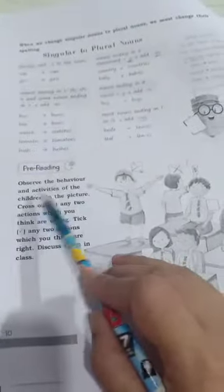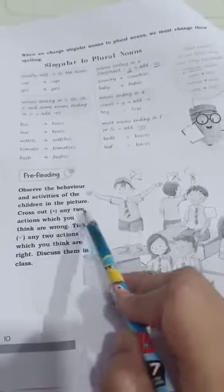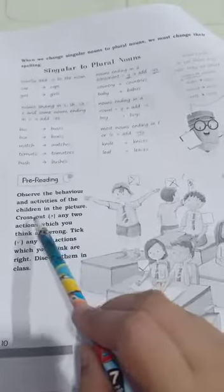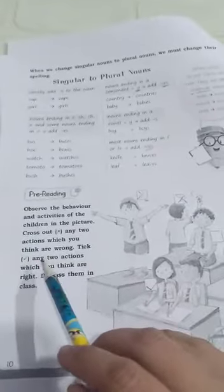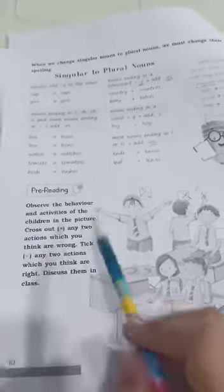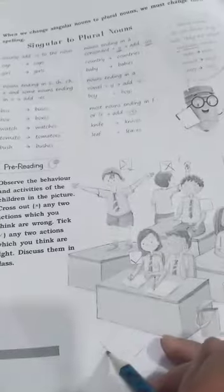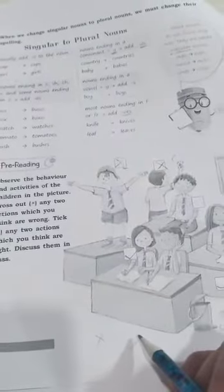Here what we are going to do is, we have to observe the behavior and activities of the children in the picture and then what is right and what is wrong to be done in the class. So, we have to cross the wrong things and tick the right ones.